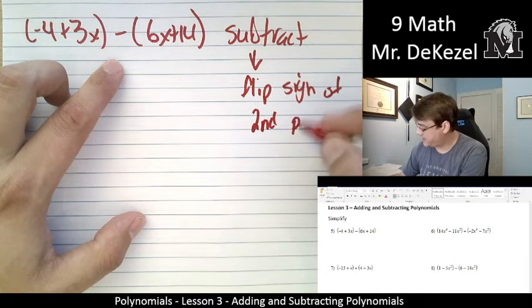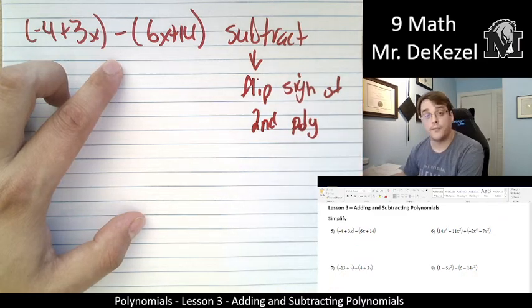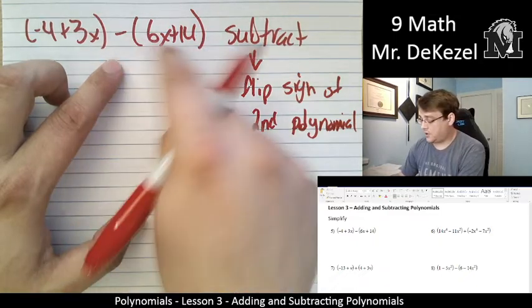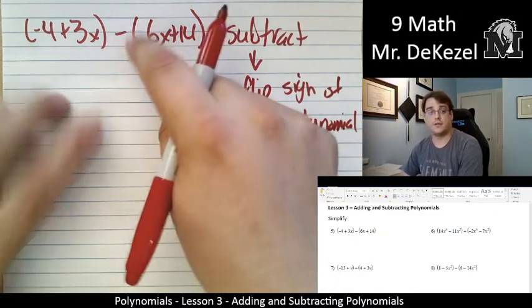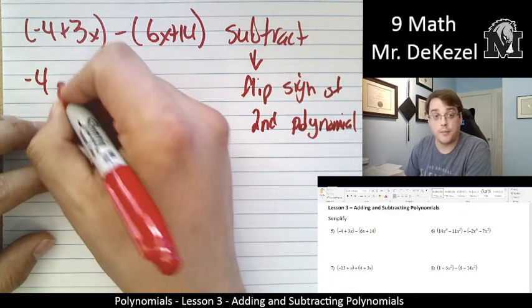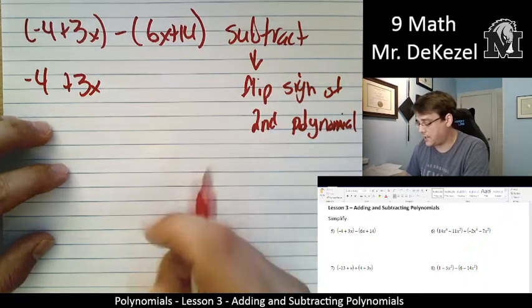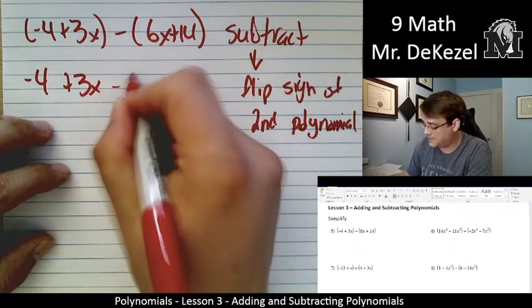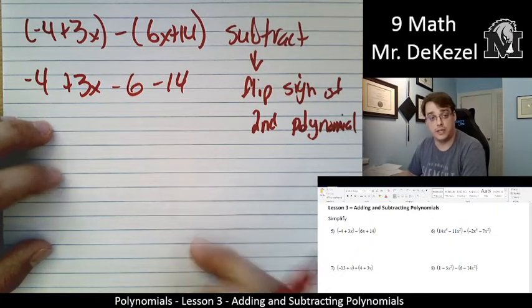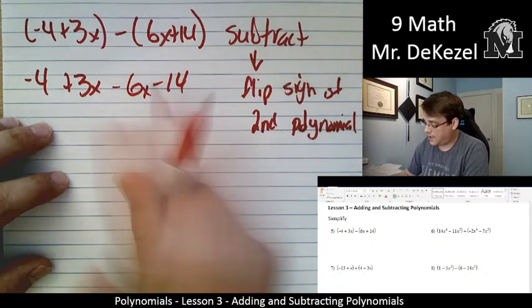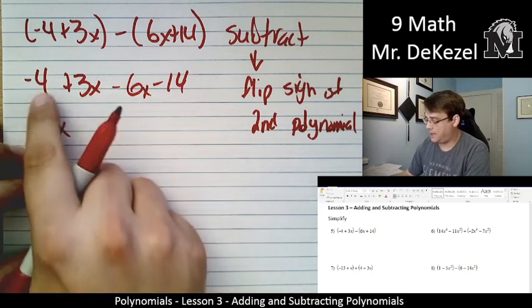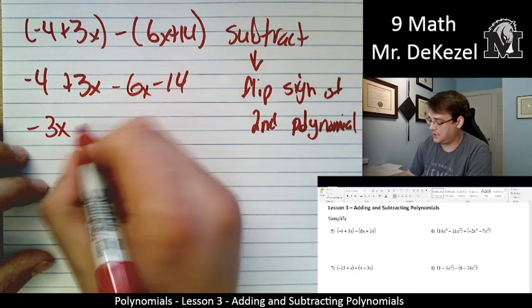We want to turn everything here into the opposite sign. So we have minus 4 plus 3x. I can get rid of the brackets. We flip plus 6x to minus 6x, and plus 14 to minus 14. Then we can complete our problem. 3x minus 6x is minus 3x. And then minus 4 minus 14 is minus 18.